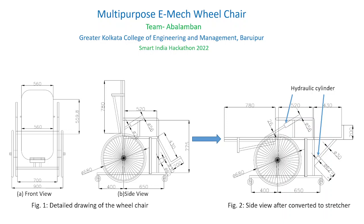We have already prepared 2D drawings of the wheelchair. The front view and side view of the wheelchair are shown in figure 1. The multi-purpose electric wheelchair has the potential to become a bed or stretcher, as shown in figure 2. The conversion from chair to stretcher or vice versa will be controlled by a hydraulic system.